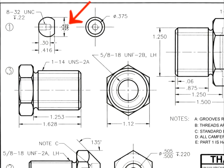The first is a unilateral tolerance: 0.5 minus one thou, minus five thou — but expressed in limit form, giving us 0.499 and 0.495. We also have 0.5 plus zero, plus five thousandths — unilateral from the base dimension of 0.5 — again expressed in limits form.